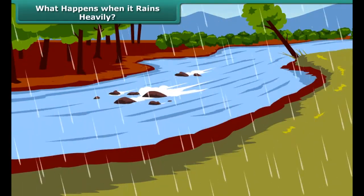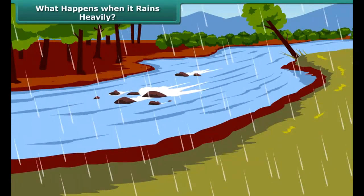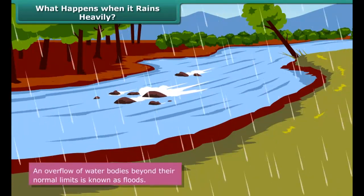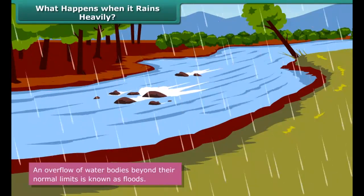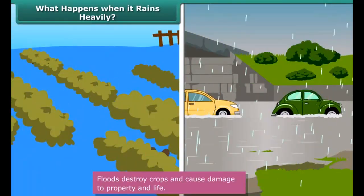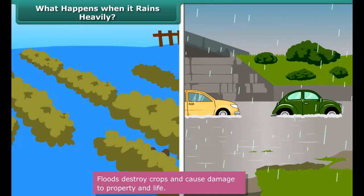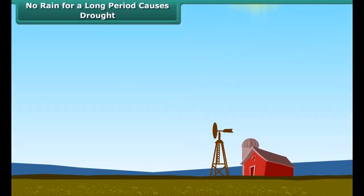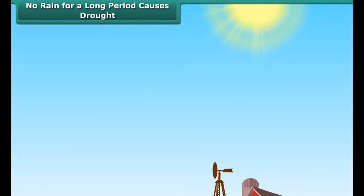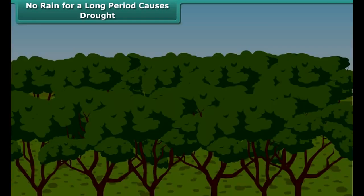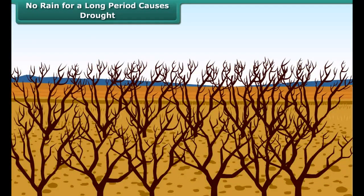In our country, most of the rainfall occurs during June, July, and August. It gives us respite from the hot and humid summer, and sowing of many crops depends on monsoon. But excessive rainfall leads to a rise in water levels of ponds, lakes, and rivers, causing them to overflow. Such an overflow of water bodies beyond their normal limits is known as floods. Floods destroy crops and cause damage to property and life, and are an annual feature in India.